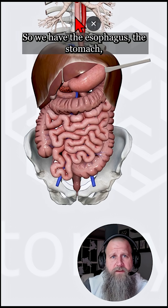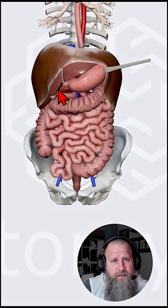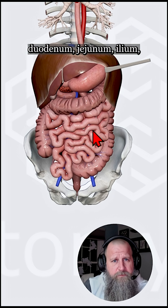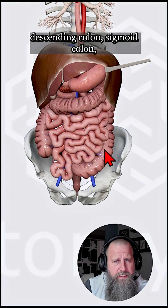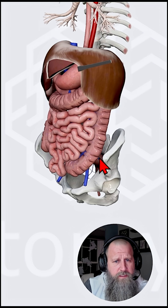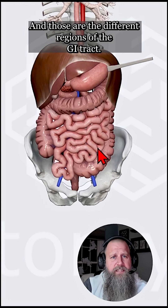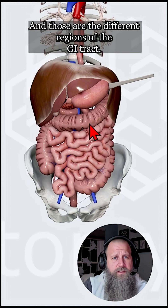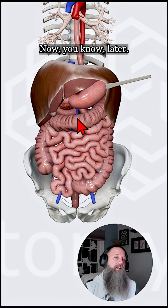So we have the esophagus, the stomach, duodenum, jejunum, ileum, ascending colon, transverse colon, descending colon, sigmoid colon, rectum, and then the anus. And those are the different regions of the GI tract. Now you know. Later.